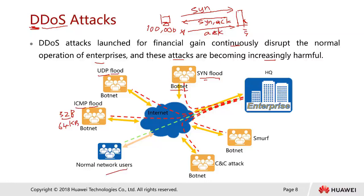Legitimate users trying to access the company network — via VPN or application/email servers — can't get through because the network pipe is overwhelmed with all the unnecessary attack traffic. We also have something called the CnC attack, which stands for command-and-control attack.